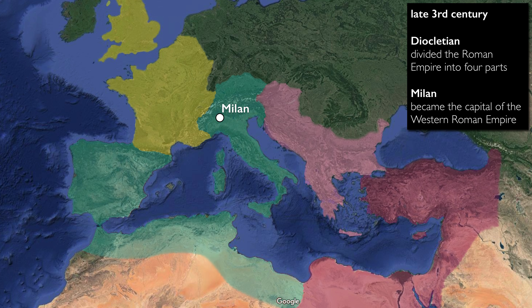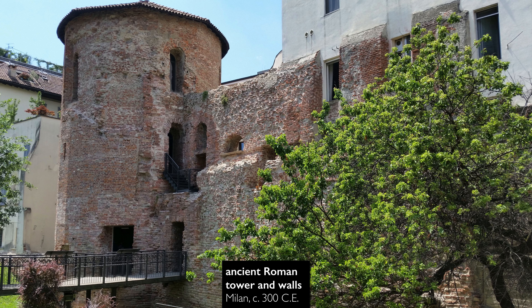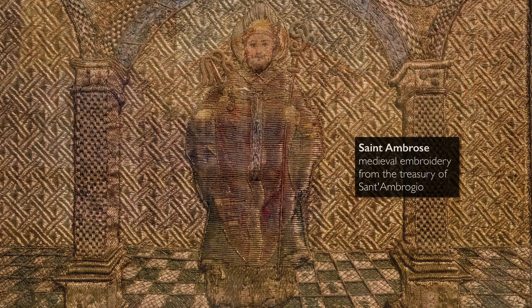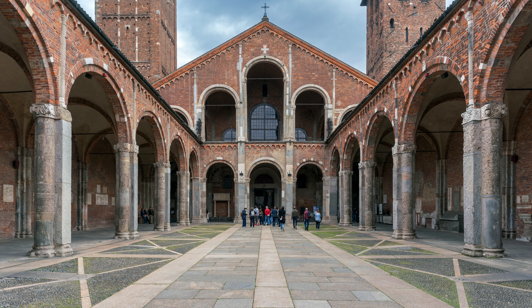I'm transported back to the third century, to the time when the ancient Roman emperor Diocletian divided the Roman Empire to help secure it and created a new capital here in Milan. So the city becomes a very important capital at the beginnings of Christianity and the end of the Roman Empire. Christianity was a young religion still working out which specific beliefs would be followed.